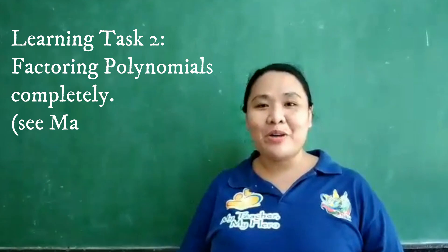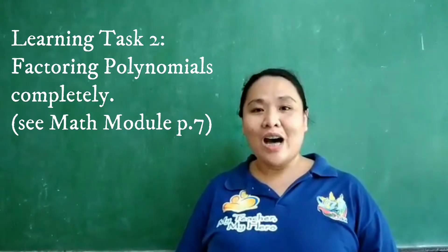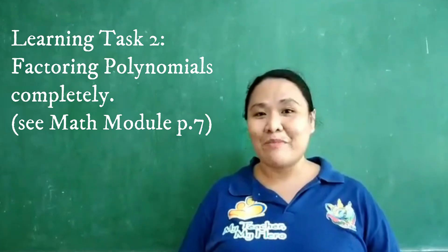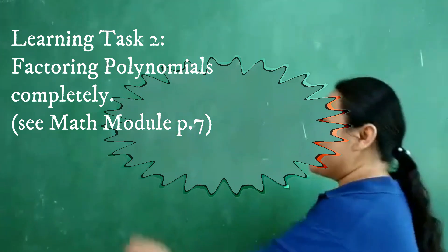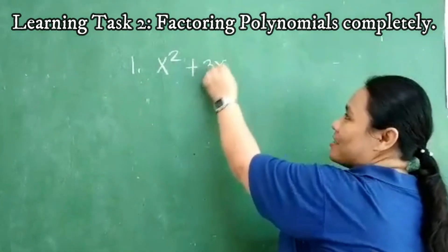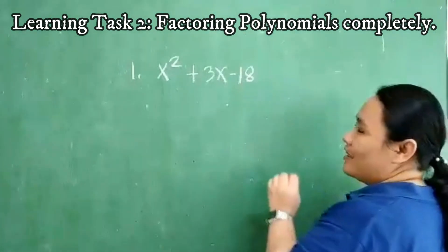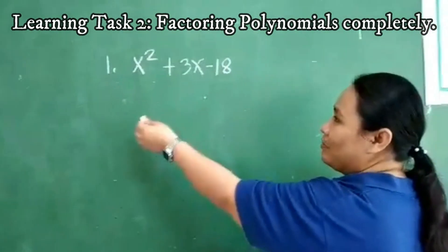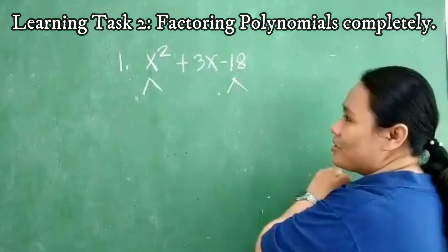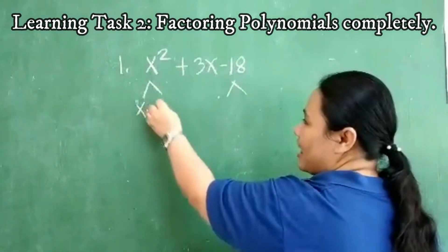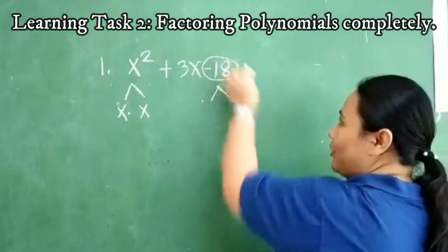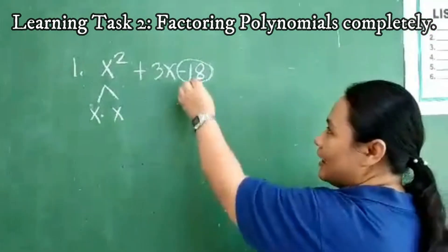Today, we're going to continue how to factor out polynomials completely under learning task number 2. Let's proceed to your example. The given is x squared plus 3x minus 18. In order to factor out completely, we need to factor the first term and then the last term. We have x times x for the first term. For the last term, don't forget the negative sign, which is negative 18.